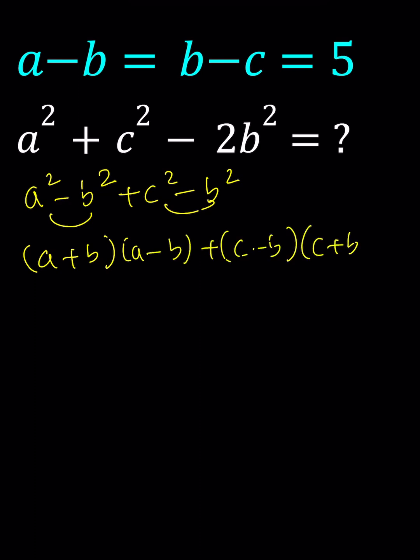Notice that a minus b is given as 5 and b minus c is given as 5. But c minus b is the opposite, so it's going to be negative 5. Now let's factor out the 5 here.